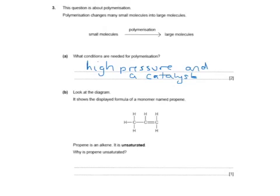Look at the diagram. It shows the displayed formula of a monomer called propene. Propene's an alkene. It's unsaturated. Why is it unsaturated? This is the key here in the structure. It has a carbon-carbon double bond. So we're going to write, it has a C-C double covalent bond.